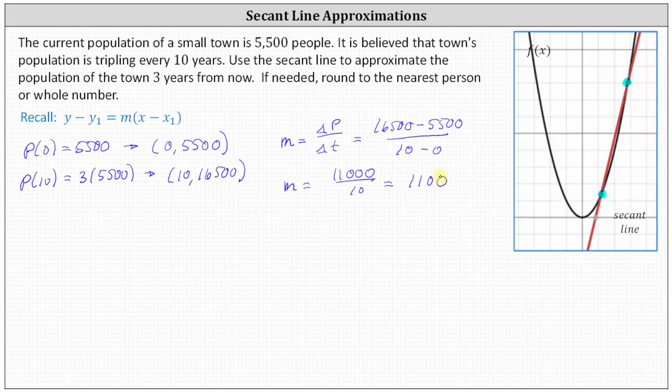Now that we have a slope, we can select one of the two points and use point-slope form of a line to determine the equation of the secant line, which we'll then use to make an approximation for the population three years from now. Let's use this first point, zero comma 5,500, and we'll use point-slope form of a line. We have y minus 5,500 equals the slope m of 1,100 times t minus zero. Let's solve for y by adding 5,500 to both sides. That gives us y equals 5,500 plus 1,100t.